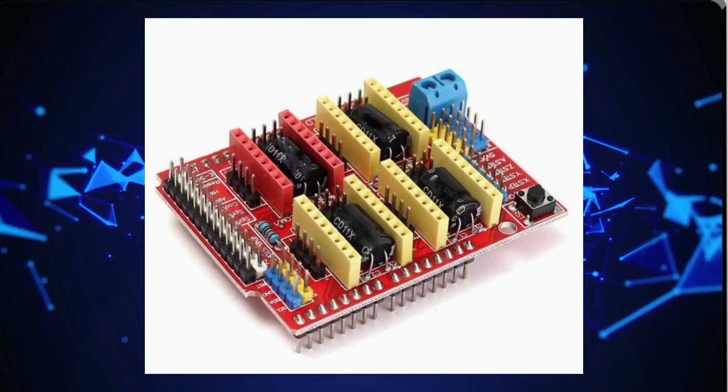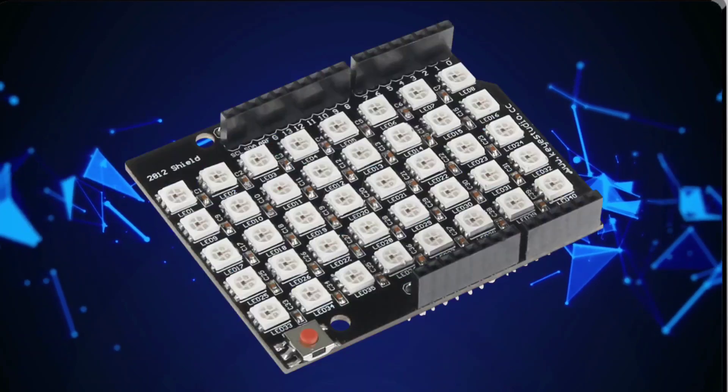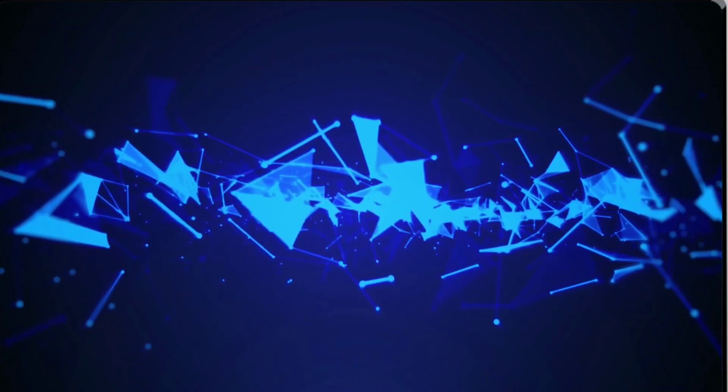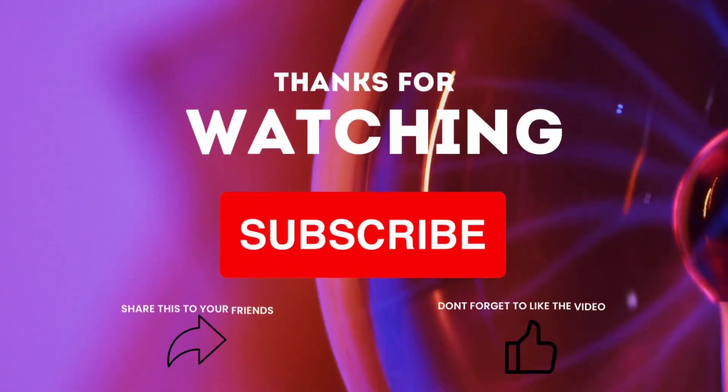Arduino Uno is compatible with a wide range of shields, which are additional boards that can be plugged into the top of the Uno to expand its capabilities. This allows for easy integration of functionalities such as Wi-Fi, Bluetooth, displays, and more.